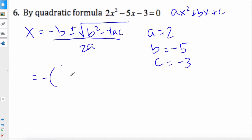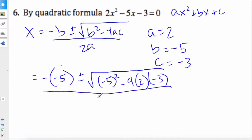It's negative b is negative 5. Be careful of the double negative, plus or minus the square root of negative 5 squared. Put it in parentheses because you don't want to drop the negative by accident. 4a is 2, c is minus 3, and that is all over 2 times 2.